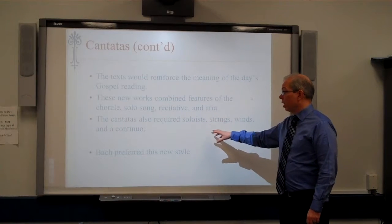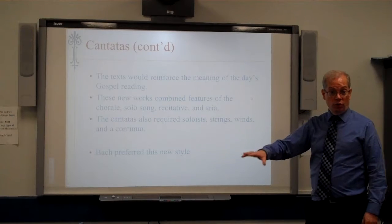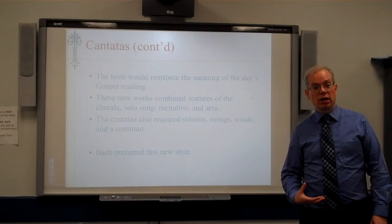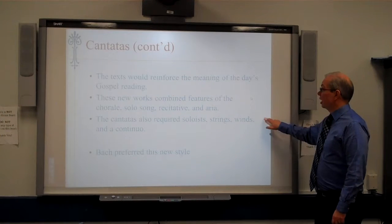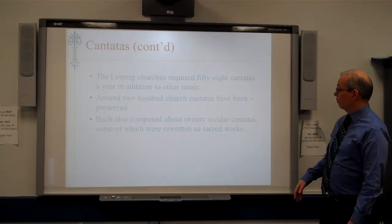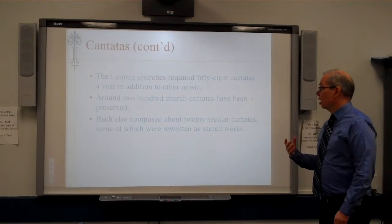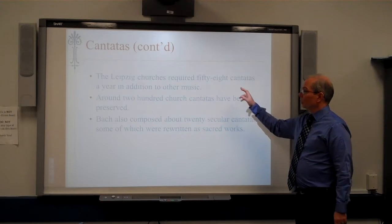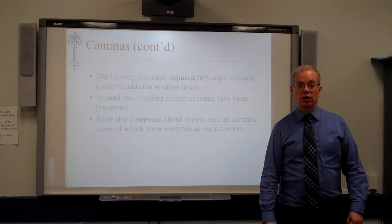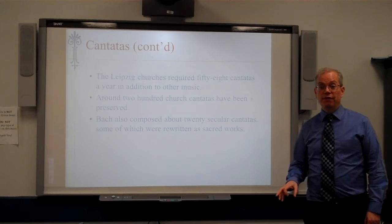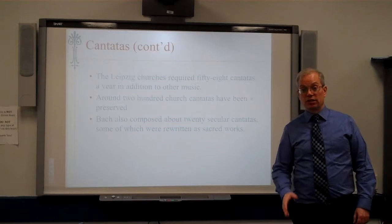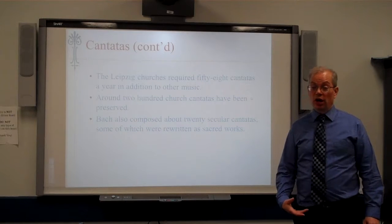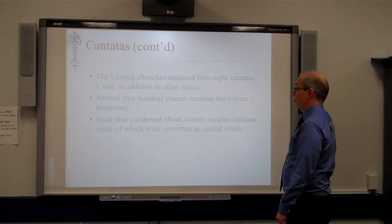Bach's cantatas required strings, winds, and continuo for the orchestra, plus a choir and vocal soloists. He wrote in excess of 250 cantatas, over approximately 200 of which we have the music for today. The churches he composed for in Leipzig needed 58 cantatas a year. Early in his career Bach wrote a lot of new cantatas, and later he recycled many he had written earlier.